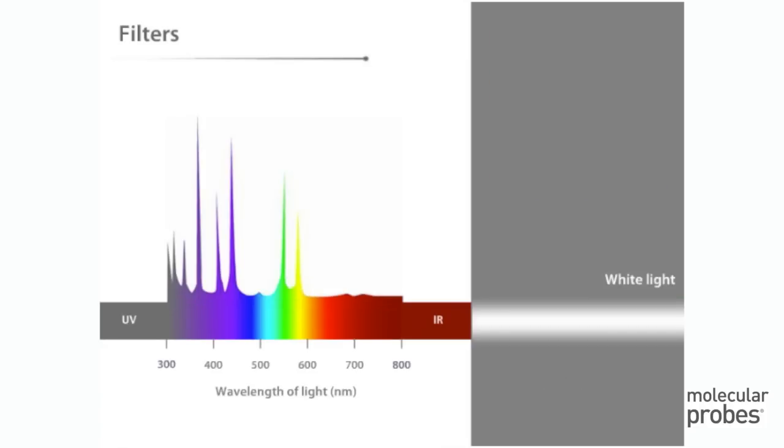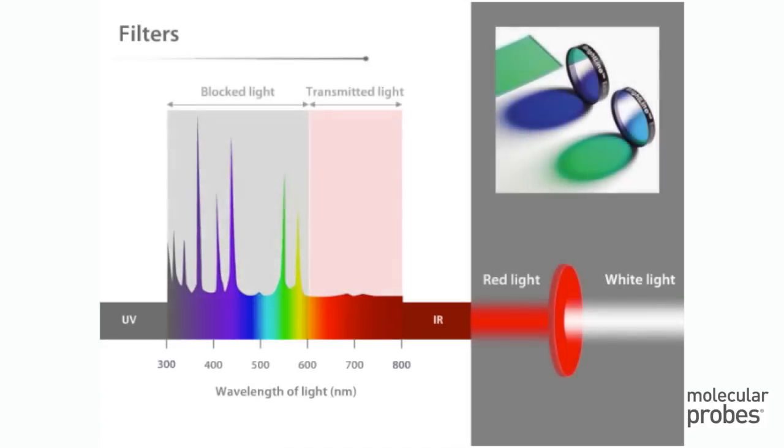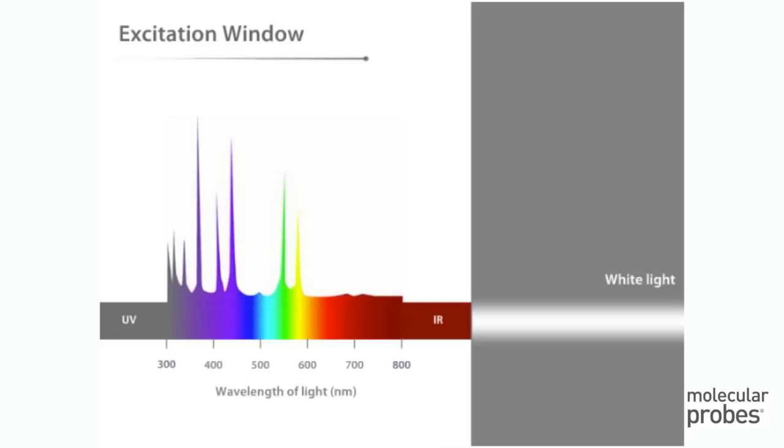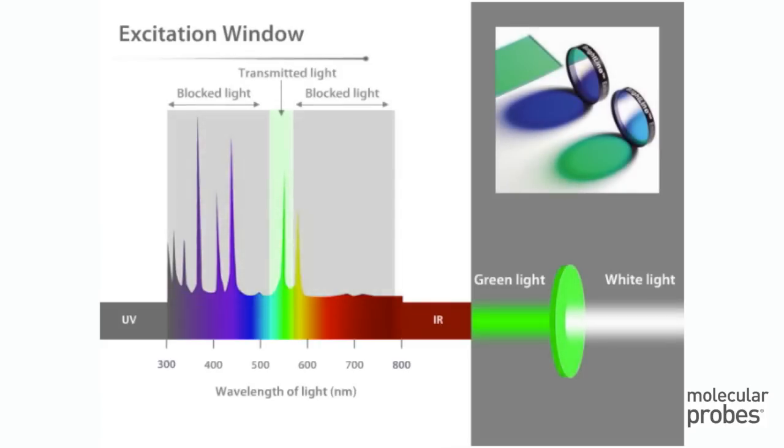When using broadband white light sources, it is necessary to filter the desired wavelengths needed for excitation. This is most often done using optical filters. Optical filters can range from simple colored glass to highly engineered interference filters that selectively allow light of certain wavelengths to pass, while blocking out undesirable wavelengths. For selective excitation, a filter that transmits a narrow range of wavelengths is typically used. Such a filter is called a bandpass excitation filter.